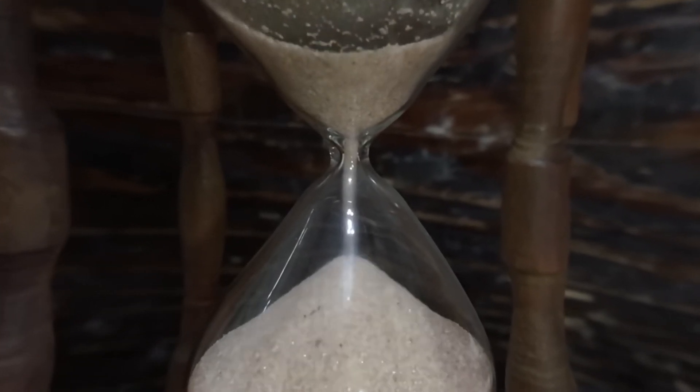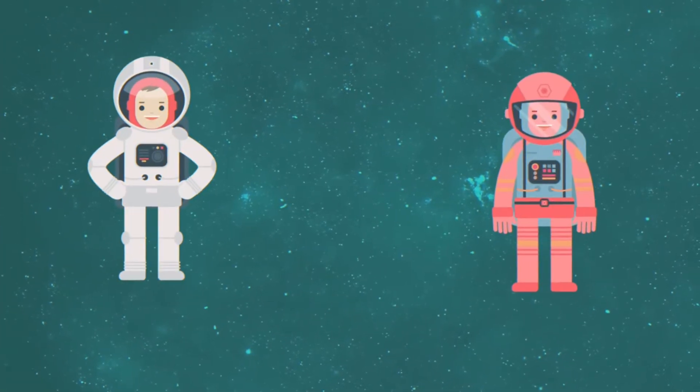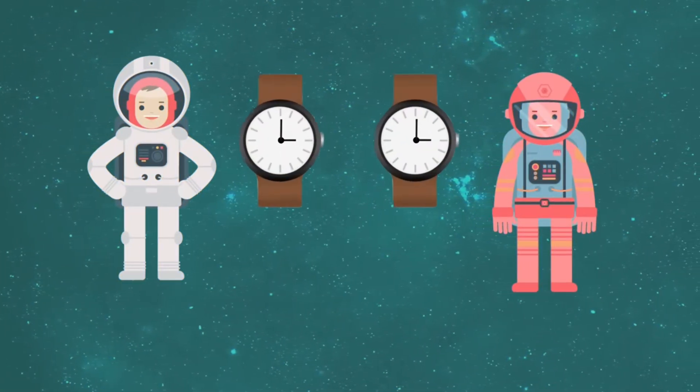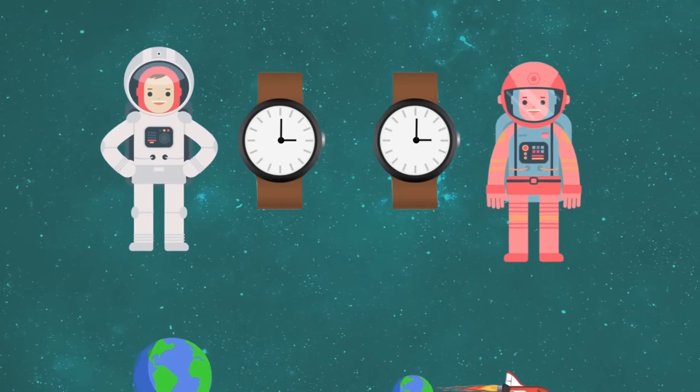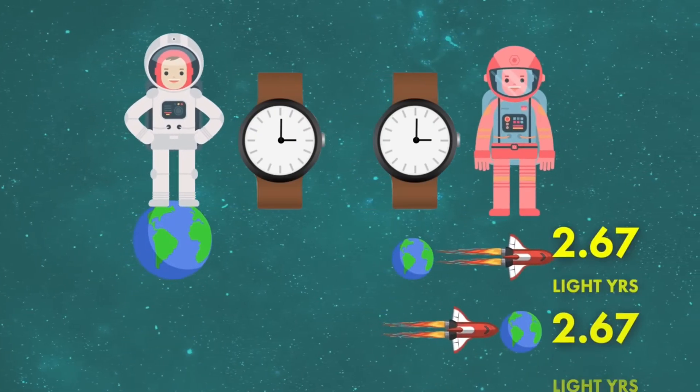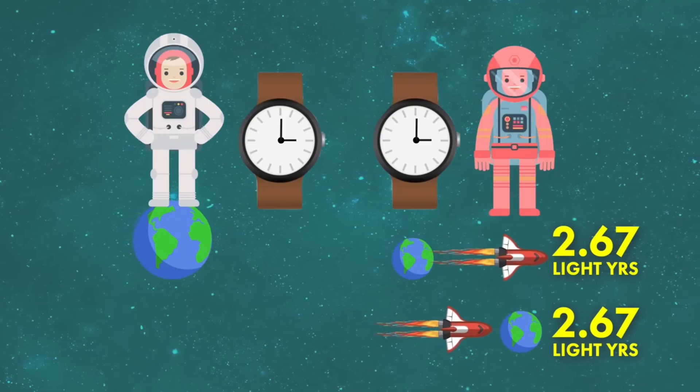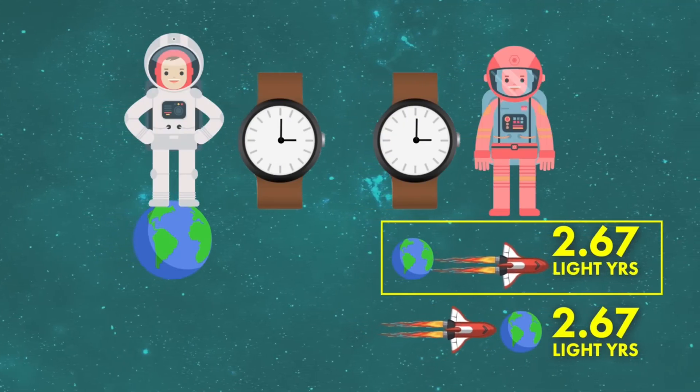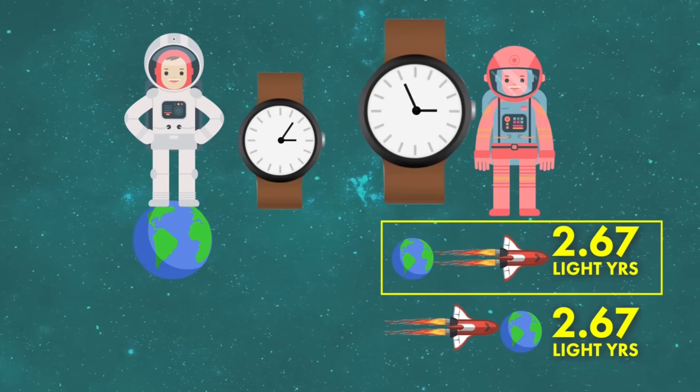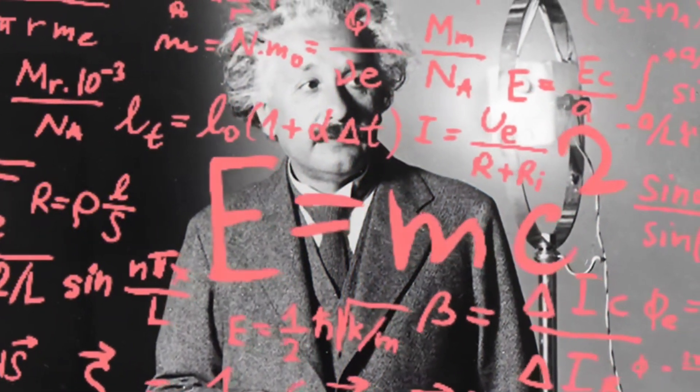...knowledge and explanations were often based on tradition, mythology, or philosophical speculation. There was a lot of valuable knowledge out there, but no systematic way to test ideas, refine them, and build upon them. Thinkers like Galileo, Copernicus, and Newton helped establish a new way of thinking where ideas were tested through observation, experimentation, and mathematics.